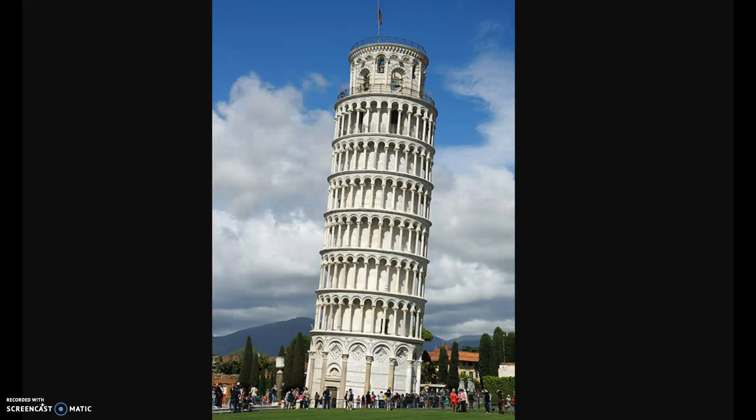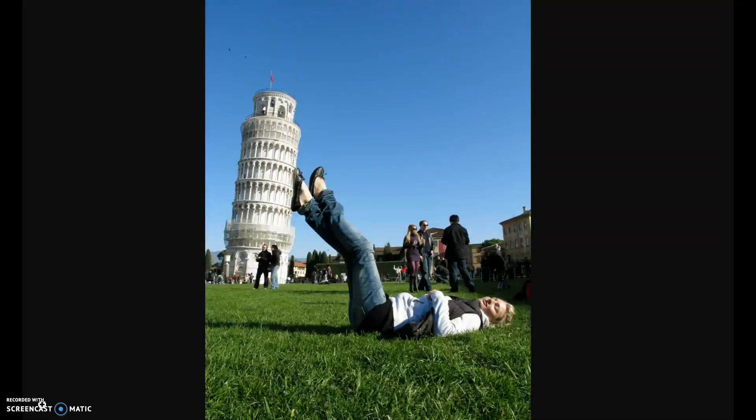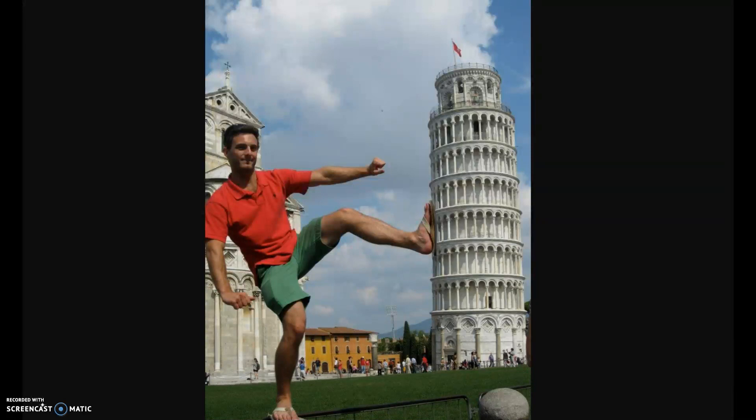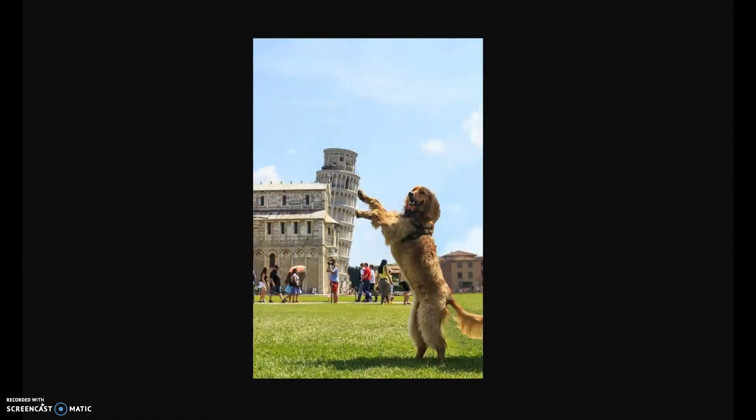But we can take this picture, and we can again play a trick on our brain. You might have seen photos like this, where people pose, and it sure looks like they're propping up the Leaning Tower of Pisa, or kicking it over. This is one of my favorites, but my very personal favorite is this one. So how can we create this optical illusion? How do we trick our brain here?